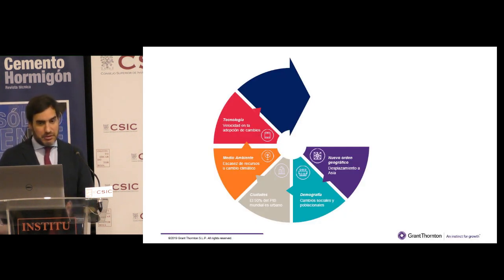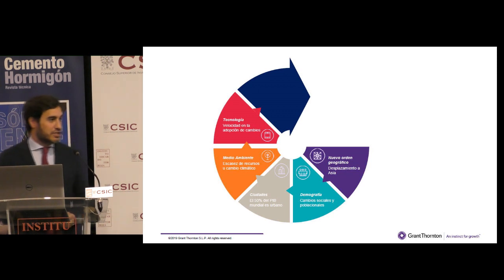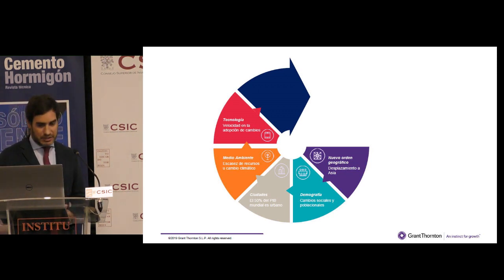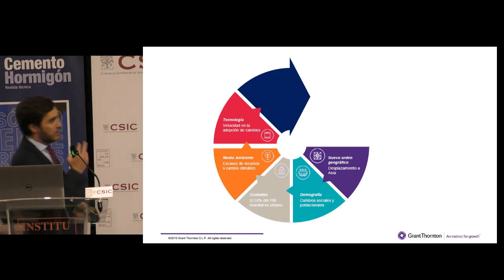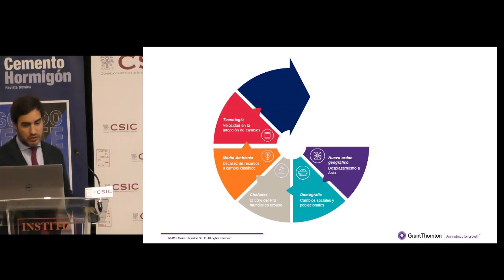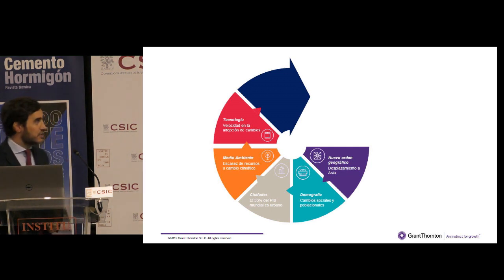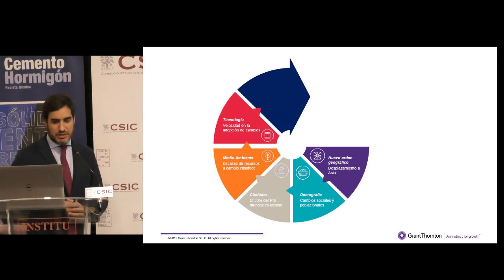Brevemente, en 2030 se prevé que 12 de las economías más potentes del mundo sean lo que hoy consideramos países emergentes. En 2015 el tamaño de la clase media en Asia-Pacífico ya era superior al de Europa-Estados Unidos. El 50% del PIB a nivel mundial lo generan las 300 áreas metropolitanas más pobladas.